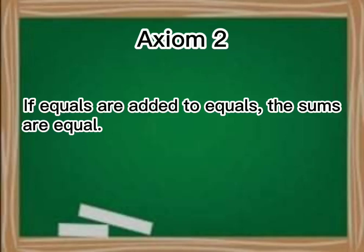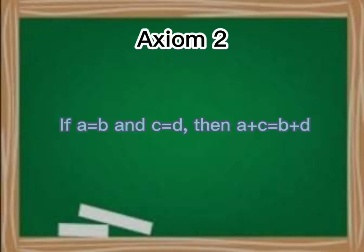Axiom 2: If equals are added to equals, the sums are equal. For example, if A is equal to B and C is equal to D, then A plus C is equal to B plus D.